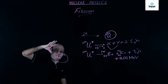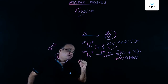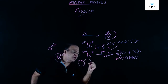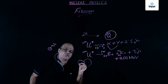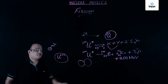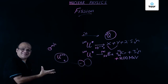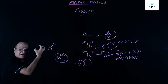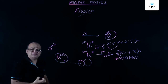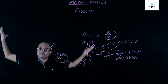In an atom bomb, two pieces of U-235 are brought together rapidly to form a mass more than the critical size — approximately the size of a cricket ball — and that is how we get an atom bomb.